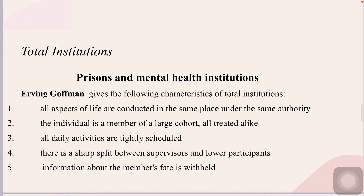Erving Goffman, in his classical study of total institutions, gave the following characteristics. Number one: all aspects of life are conducted in the same place under the same authority. Number two: the individual is a member of a large cohort, all treated alike. Number three: all daily activities are tightly scheduled. Number four: there is a sharp split between supervisors and lower participants. Number five: information about the members' fate is withheld. The most common examples of total institutions include mental hospitals, prisons, and military boot camps.